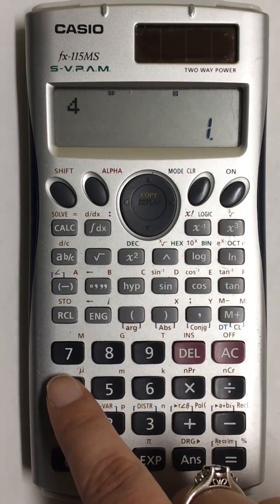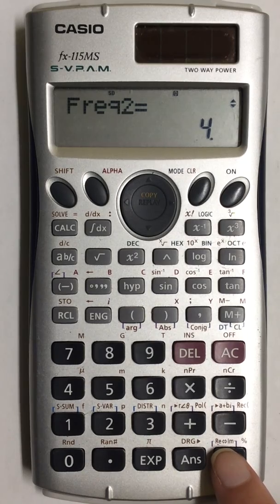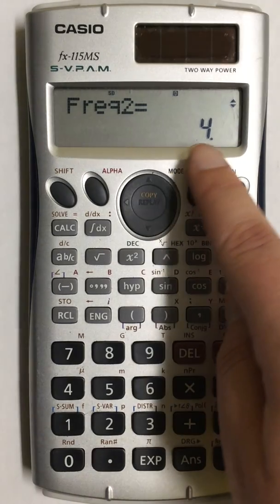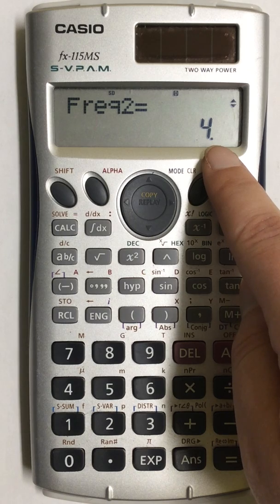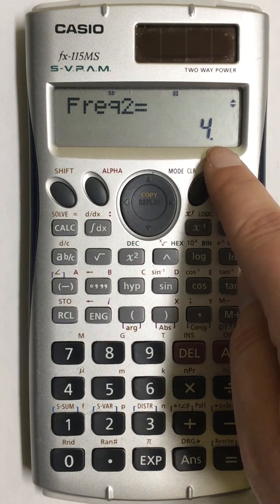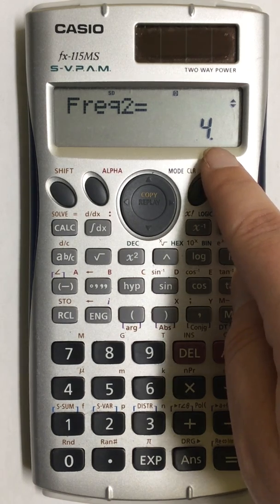Press 4 and hit enter. That will change my frequency. So that means now that I have four numbers that are 40.